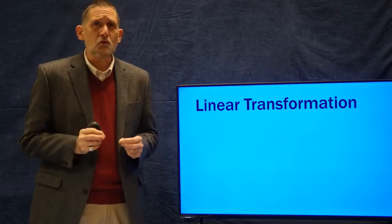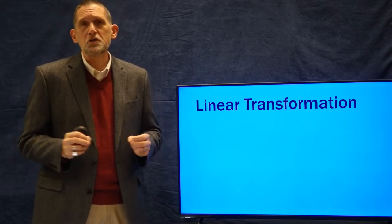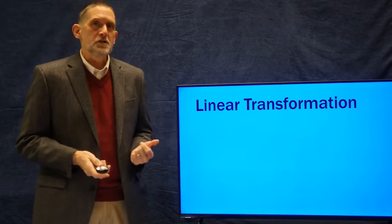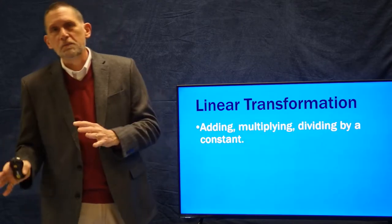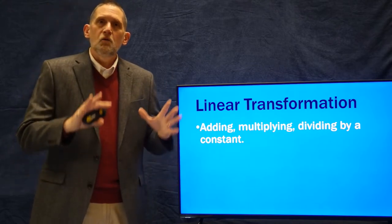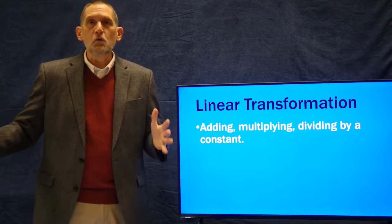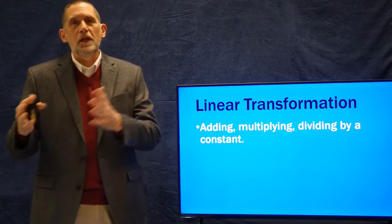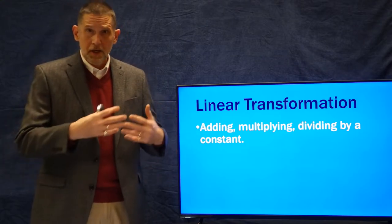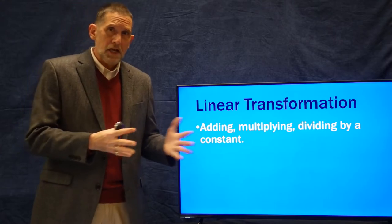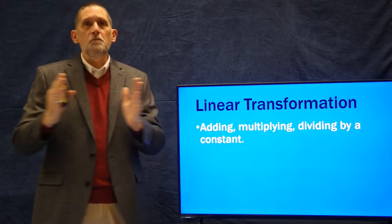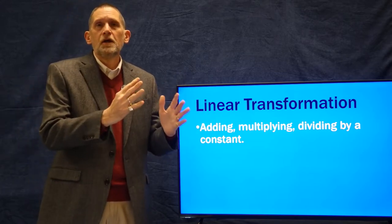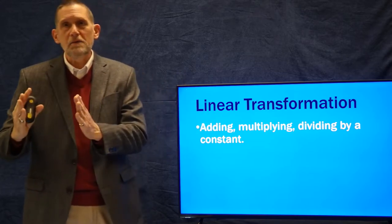One of the most basic forms of transforming variables is called the linear transformation, or an arithmetic transformation. That's when you add, multiply, or divide one variable to make it fit with another — you're adding a constant, or multiplying or dividing by a constant. It doesn't actually change anything in the variable except it will shift the mean. If you add 10 to some variable, it'll shift the mean by 10.